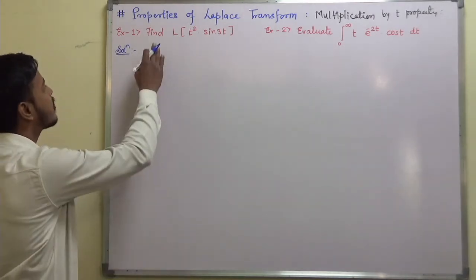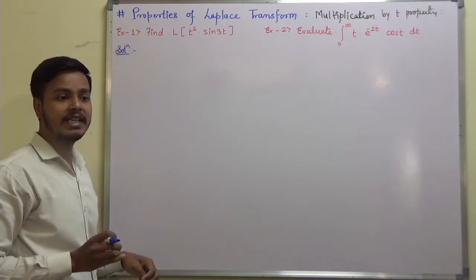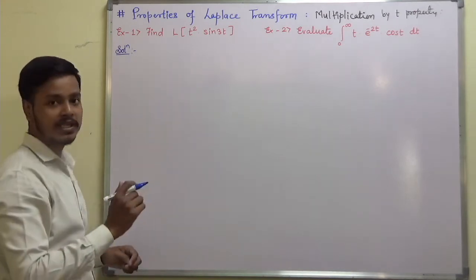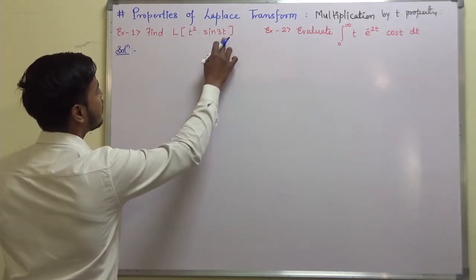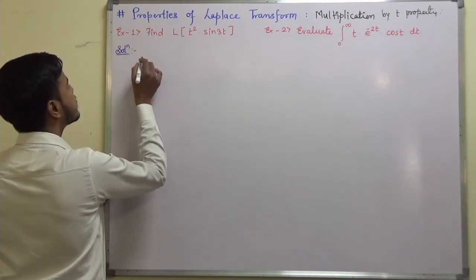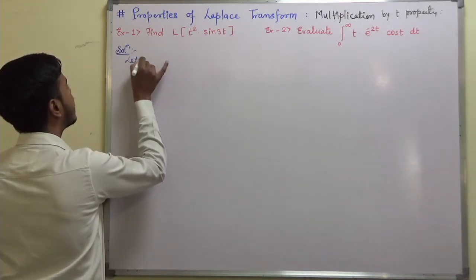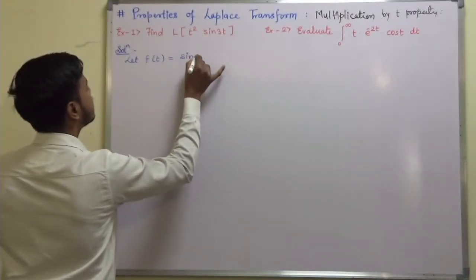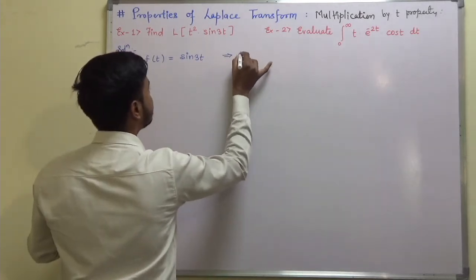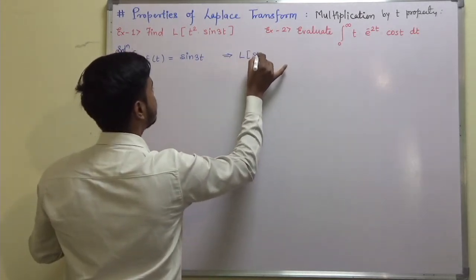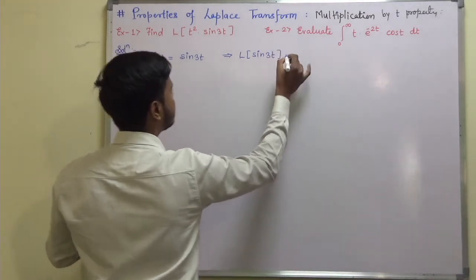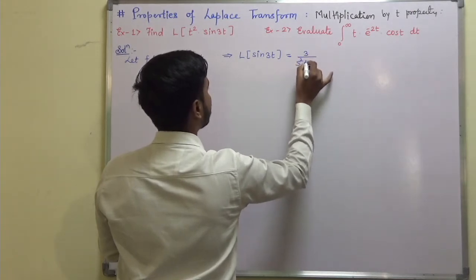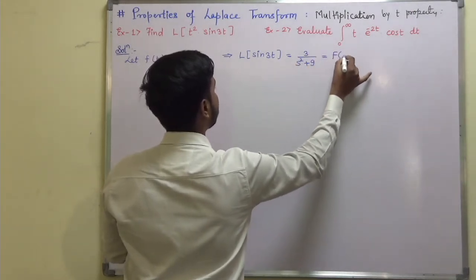The first problem says: find the Laplace transform of t squared into sine 3t. So we note that f(t) = sin(3t), which implies the Laplace transform of sin(3t) is 3 upon s squared plus 9. Call this F(s).